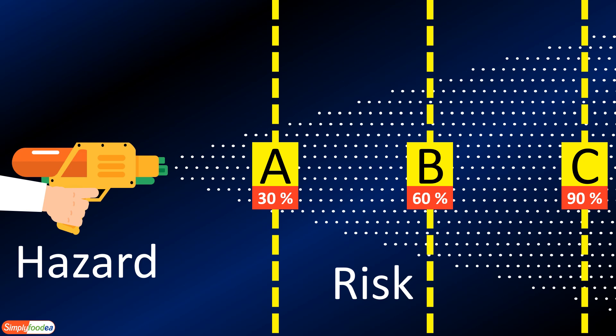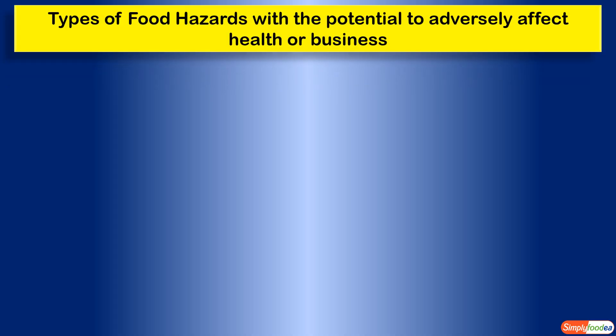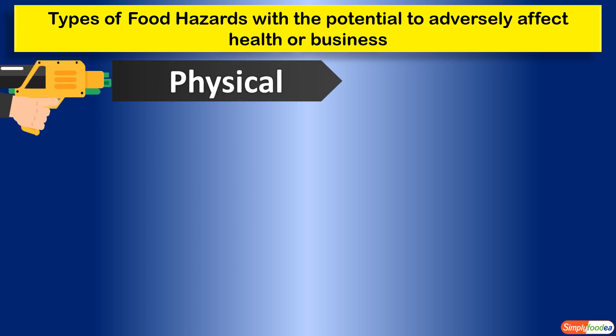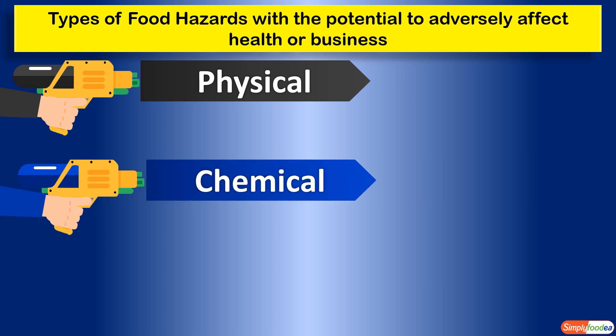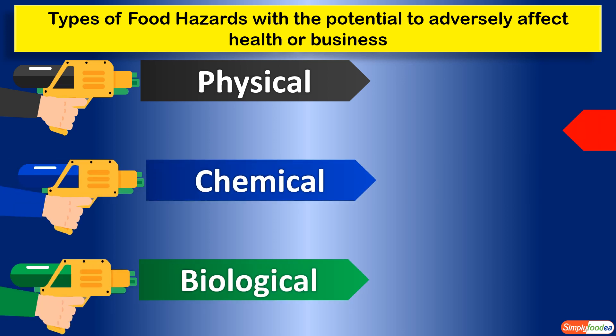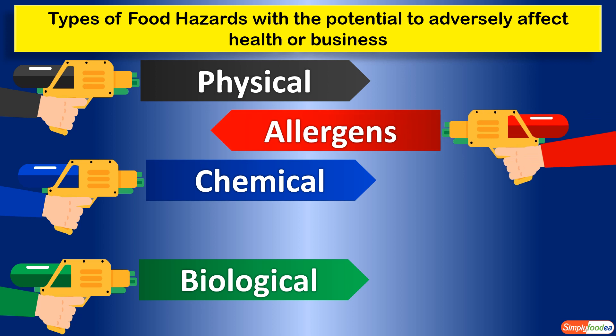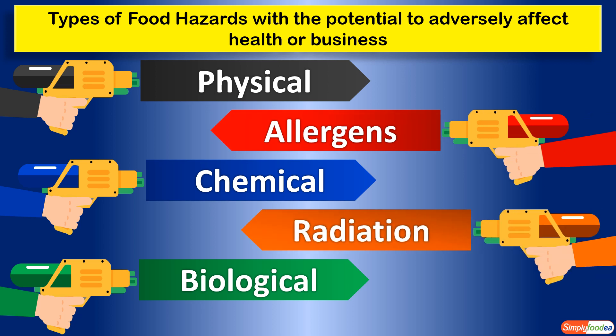So the difference between hazard and risk is that risk is the result from the hazard. Also, we say low, medium, and high risk — but we do not say low, medium, and high hazard. There are types of hazards with the potential to adversely affect health or business. There are five food safety hazards: physical hazard, chemical hazard, biological hazard, allergens, and radiation.